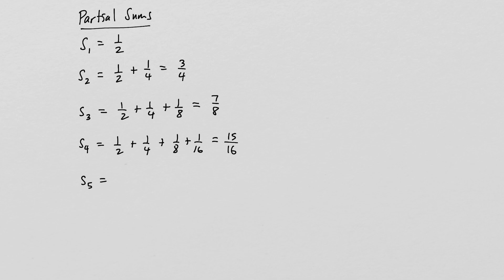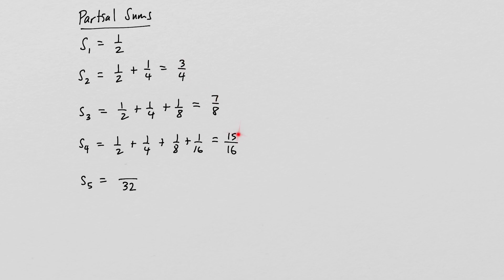Can you guess what the fifth partial sum would be? You should be able to see a pattern: the denominator of each partial sum is 2, 4, 8, 16 — powers of 2. The next denominator would be 32. And the numerator is always exactly one less than the denominator, so we would expect to get 31 over 32. And this is indeed the case.